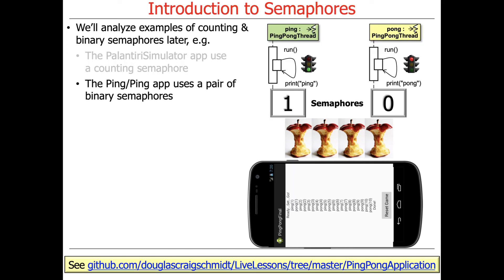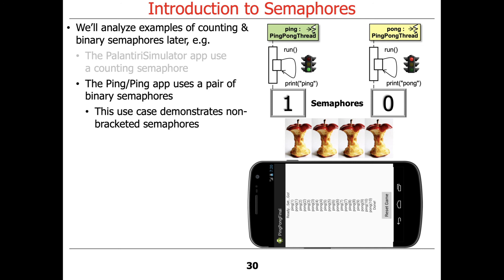There's a different example we'll look at later: the PingPong app. It uses a pair of binary semaphores instead of one counting semaphore, letting threads take turns pinging and ponging. This demonstrates non-bracketed semaphores — one thread acquires a semaphore and then releases the other semaphore, and vice versa, which is how we're able to ping and pong back and forth.